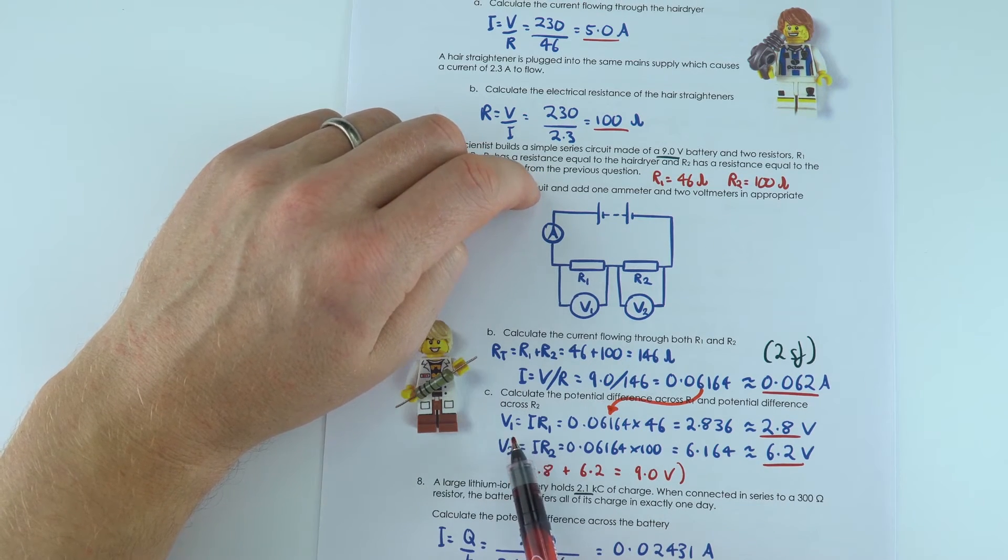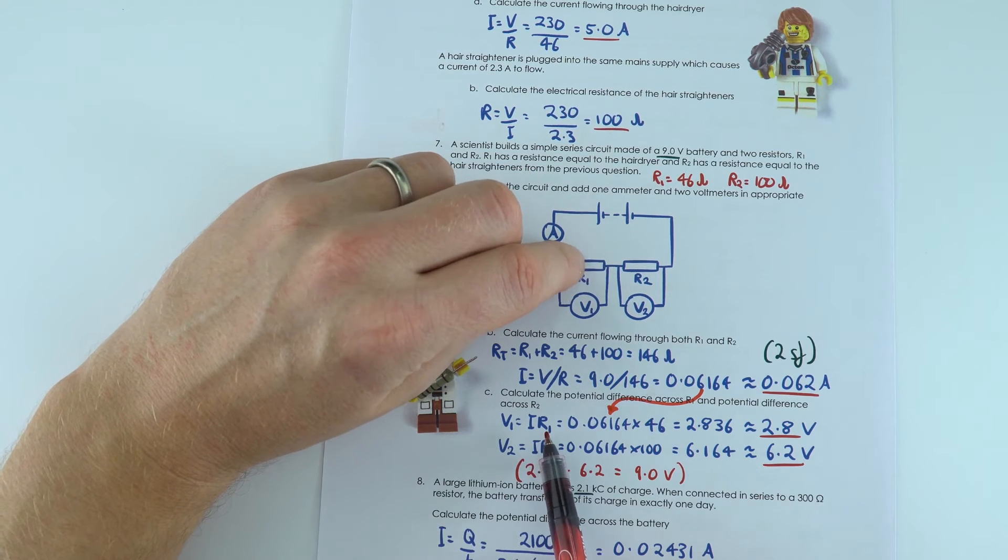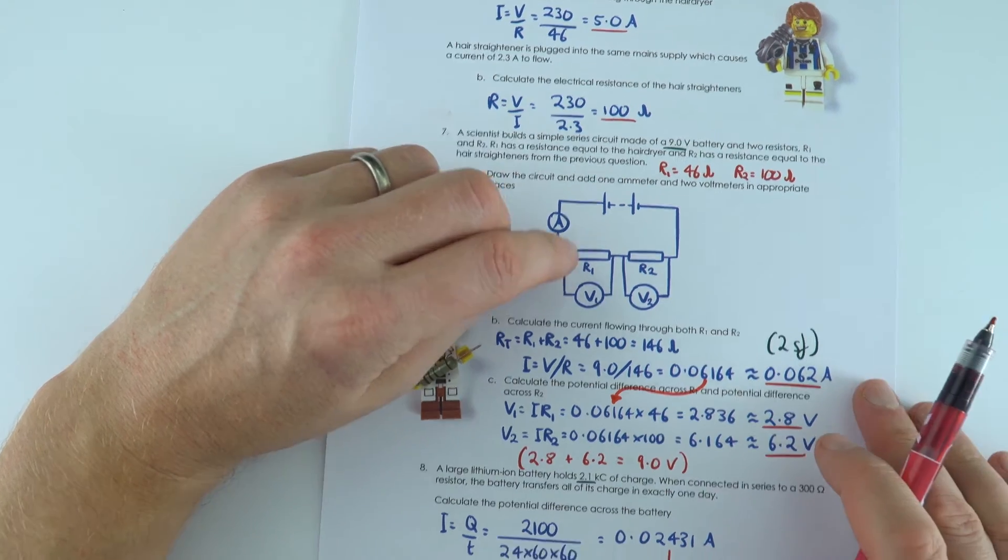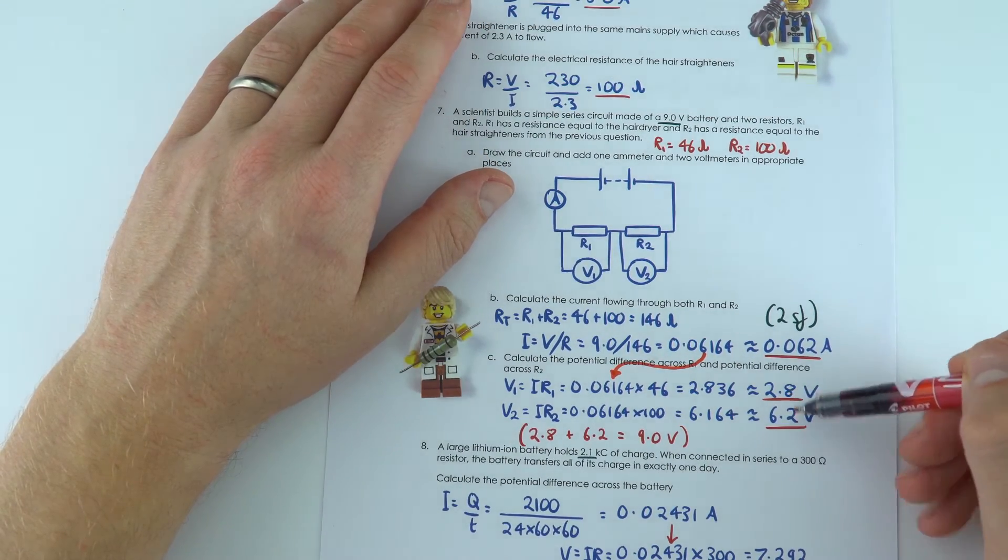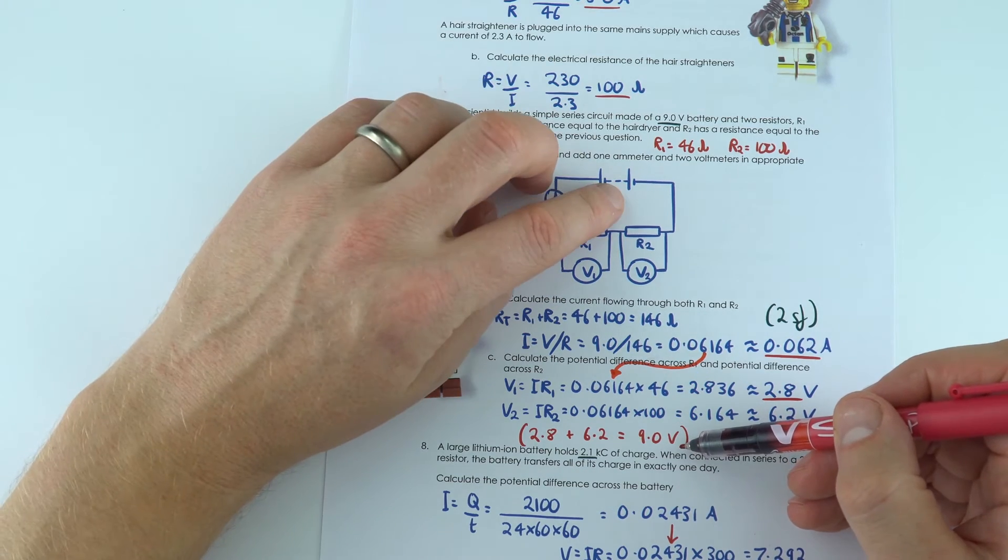Now again, all I did was apply the equation V equals I times R. If we know the current through it and the resistance of this component, we can find out the potential difference across it. And what's quite interesting to note is that if you add these two potential differences together, they then are equal to the potential difference of the battery.